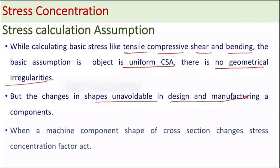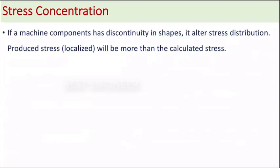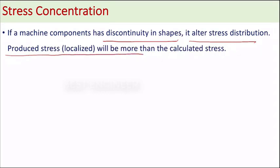When a machine component's shape or cross-section changes, stress concentration will act. If a machine component has discontinuity in shape — that is, a change in cross-section or some obstacles like holes — the altered stress distribution produces localized stress that will be more than the calculated stress.